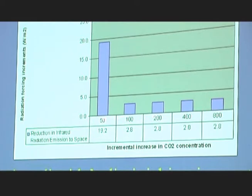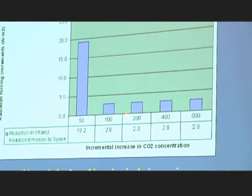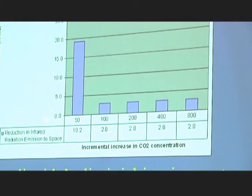You double again — not adding another 50, but doubling to 200 parts per million — and you only add another 3 watts per square metre. Double again to what it is now, about 400, and you've added another 3. So the total greenhouse forcing of carbon dioxide is around about 30 watts per square metre, of which most was in the first 50 parts per million. So by adding more carbon dioxide, it really has a small impact.